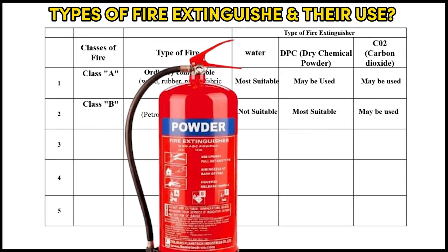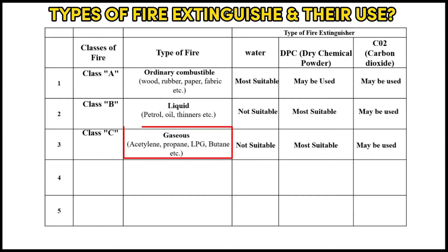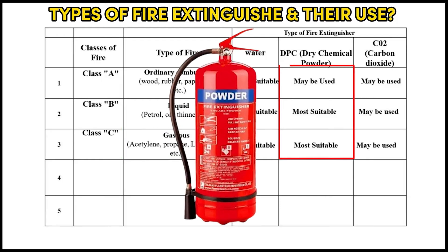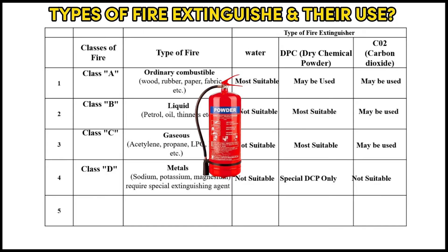Class C fires include gaseous substances like acetylene, propane, LPG, and butane — the DCP (dry chemical powder) fire extinguisher is most suitable. Class D fires include metals like sodium, potassium, and magnesium, which require a special extinguishing agent, that is DCP (dry chemical powder).